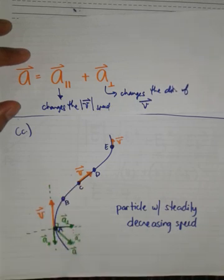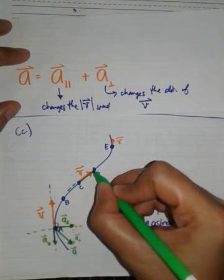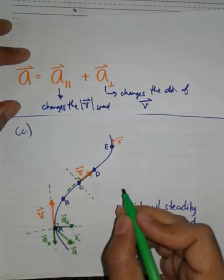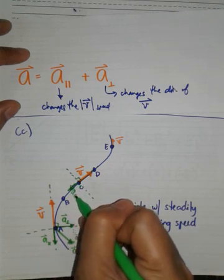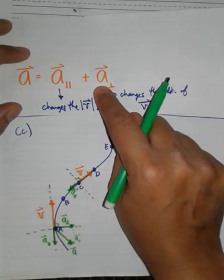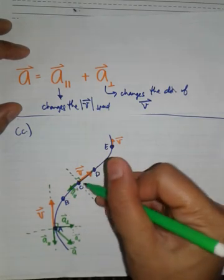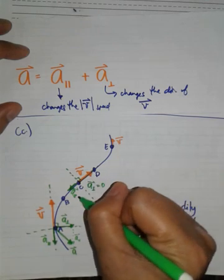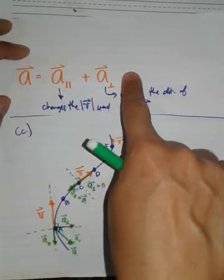The same process for C. So after sketching the V, make it one axis and then estimate a perpendicular line. Opposite is A parallel. Now, this is a straight segment. So is A perpendicular present? If there's no change in direction of V from B to D? Correct. So at this particular point, there's no A perpendicular. Zero. So A parallel is itself equivalent to the whole acceleration because this is zero.